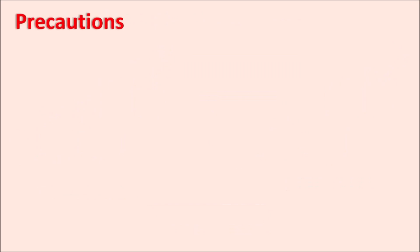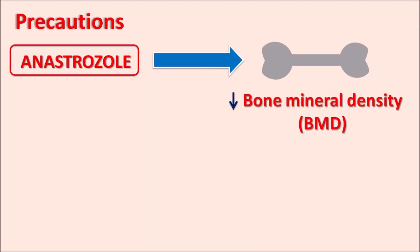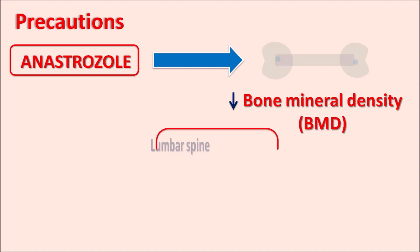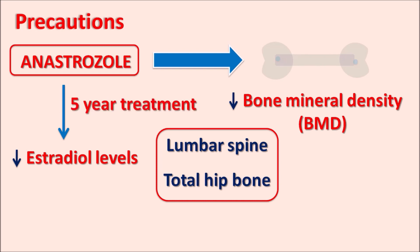Now let us see the precautions of anastrozole. This drug can affect the bones — particularly bone mineral density is reduced. Because estrogens are required to preserve bone density, when estrogens are reduced in postmenopausal women the bone mineral density is further reduced, increasing the risk of fractures. Bone strength in the lumbar spine and total hip are particularly affected. This effect is mainly due to reduced estradiol levels. It can be observed with long-term treatment; this drug is generally given for up to 5 years, further increasing fracture risk.